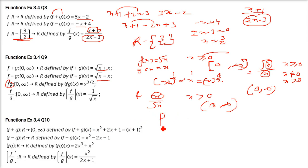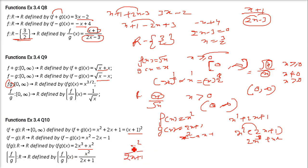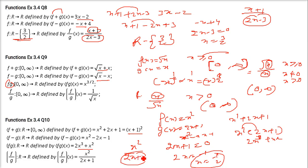Now f(x) = x² and g(x) = 2x + 1. For f + g: x² + 2x + 1 = (x+1)², no domain issues. For f − g: x² − 2x − 1, again no domain issues. For f·g: x² · (2x + 1) = 2x³ + x², no domain problem. For f/g = x²/(2x + 1): the denominator cannot be 0, so 2x + 1 = 0 gives x = −1/2. The domain is all real numbers except −1/2.